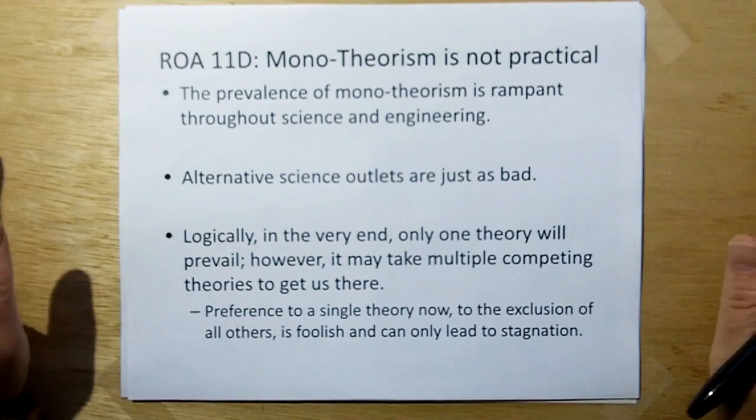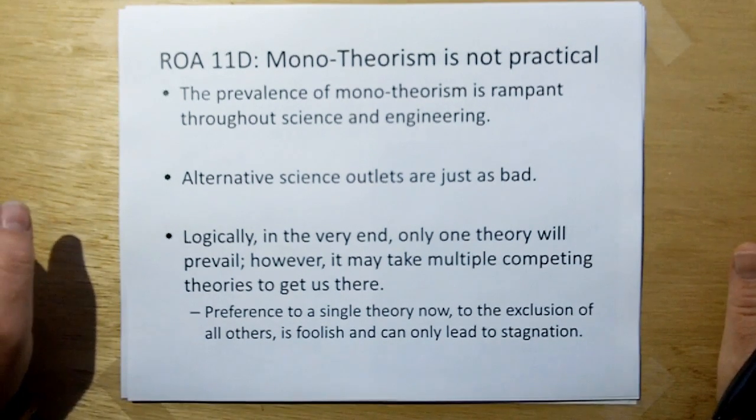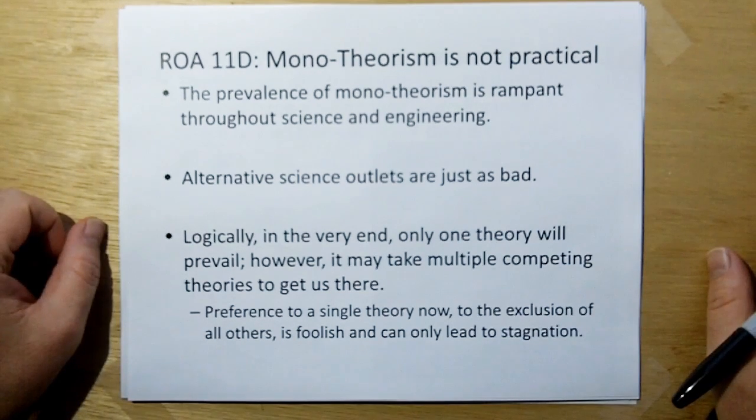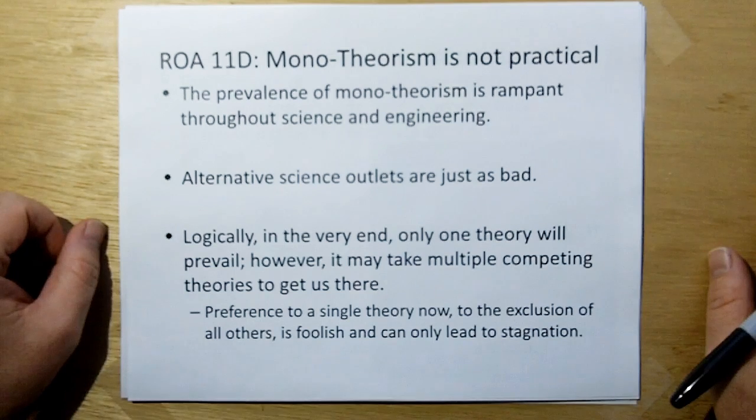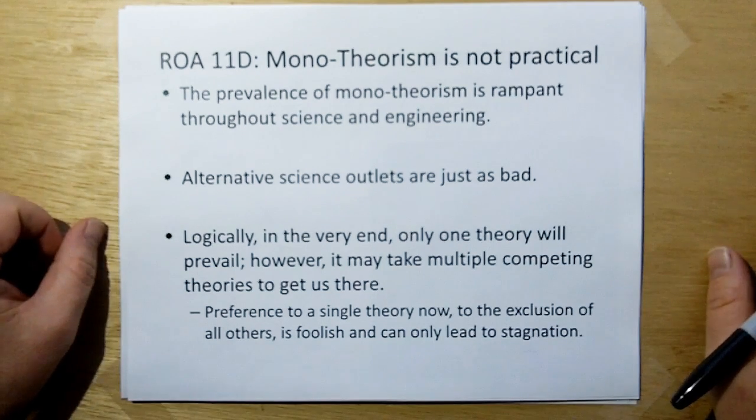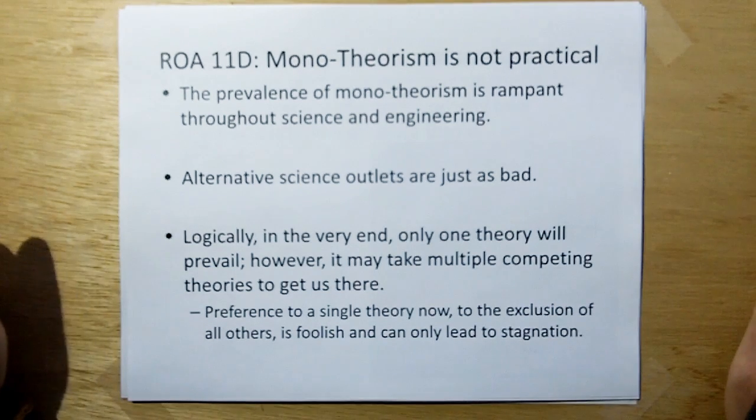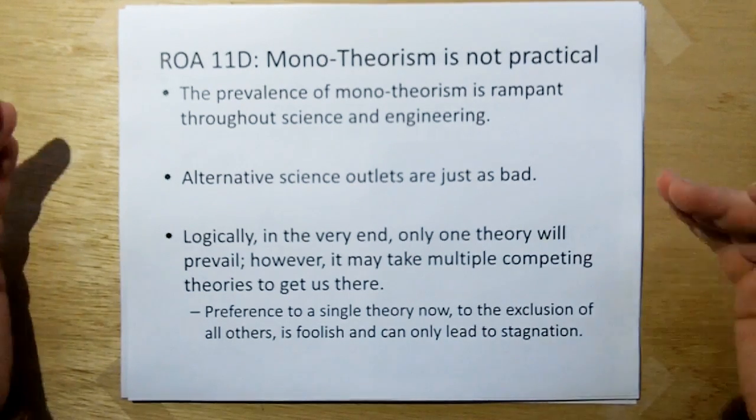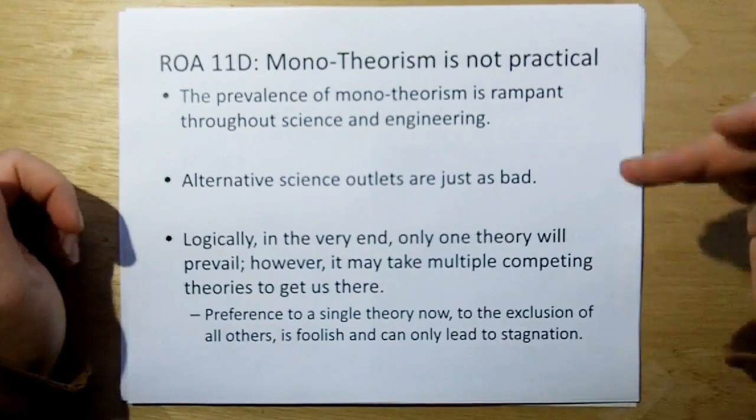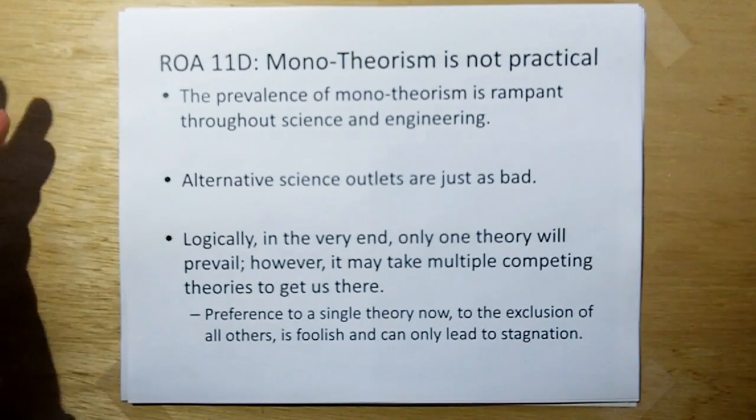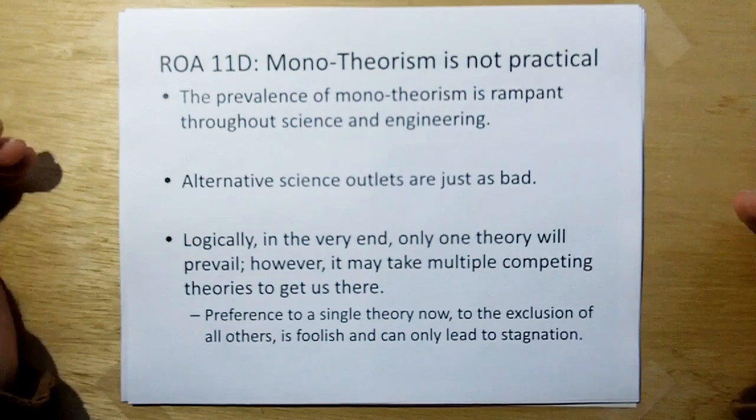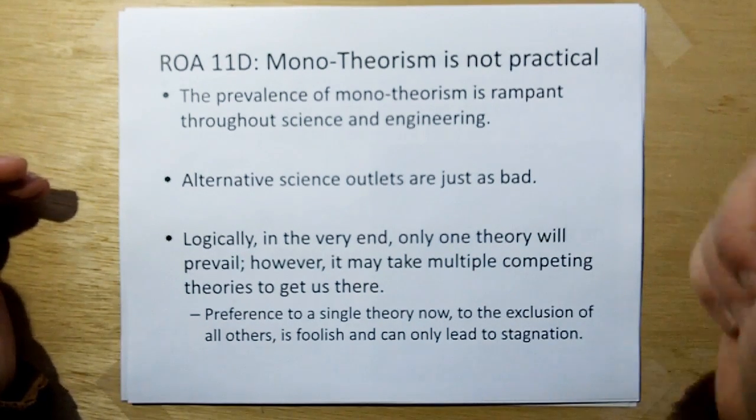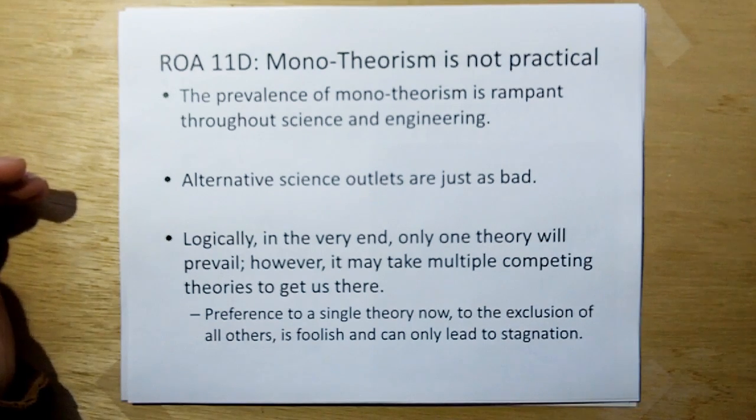Because until we get to the end we can never prove anything right until we do infinite observations. And this leads to rule of acquisition 11D. Monotheorism is not practical. The prevalence of monotheorism is rampant throughout science and engineering. And alternative science outlets are just as bad. They're both doing the same thing. Oh, I'm right and you're wrong. No, I'm right and you're wrong. And in fact, some of them might be equally right. Who the heck knows? They're too busy sitting in their little fort pointing fingers at each other saying, no, you're wrong and they don't even look at what each other has.